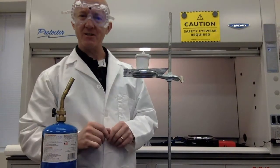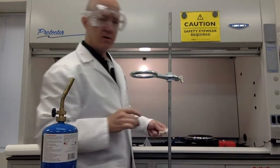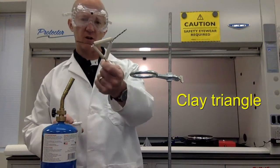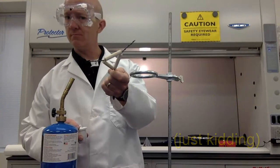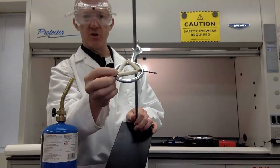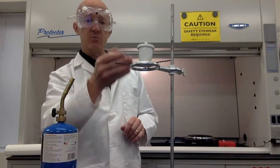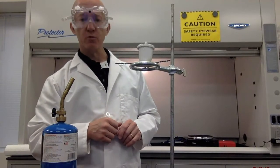So instead we use what's called a clay triangle because it's made of wood and it's square shaped. The clay triangle sits on the ring like so and allows us a more stable platform for the crucible.